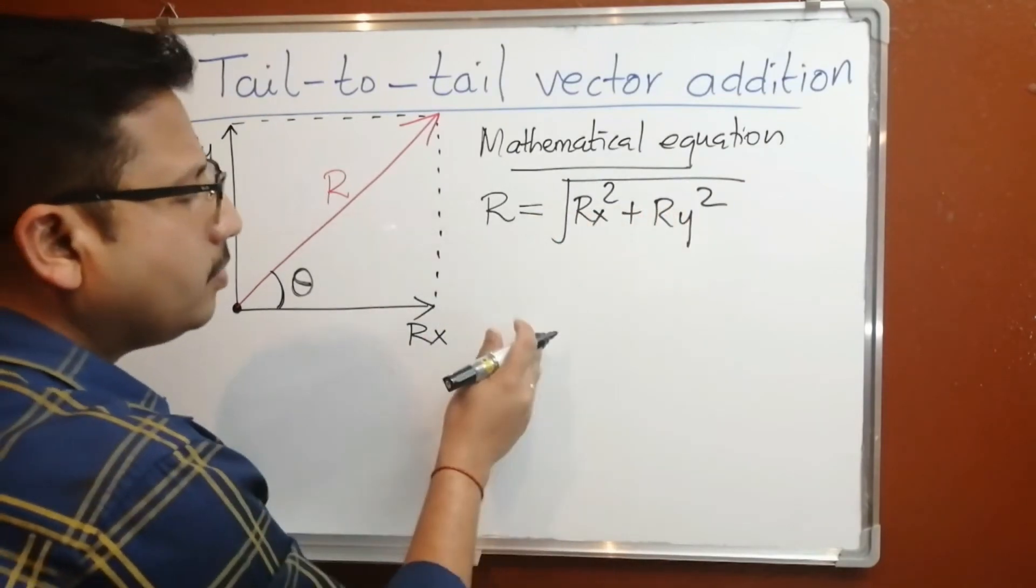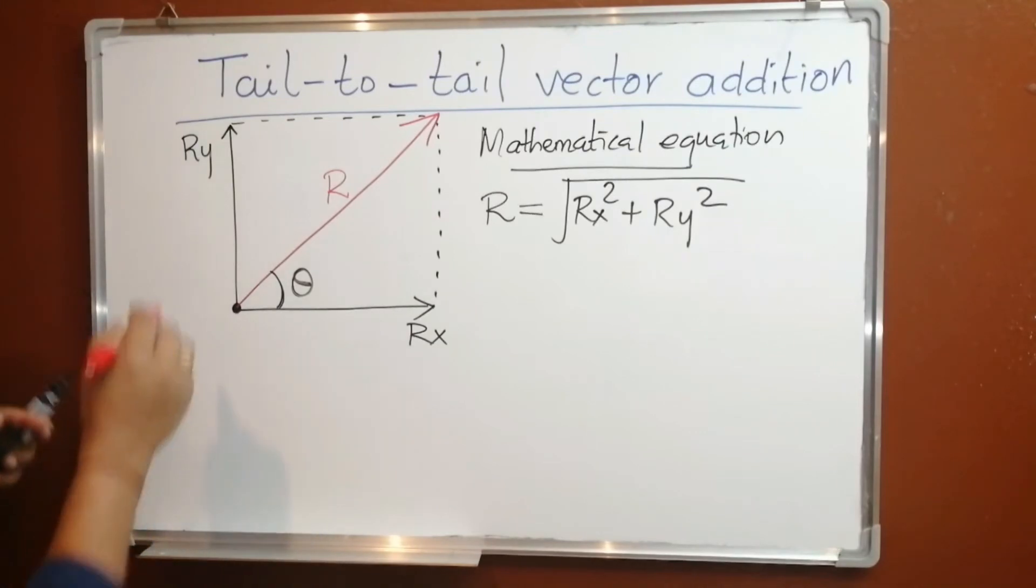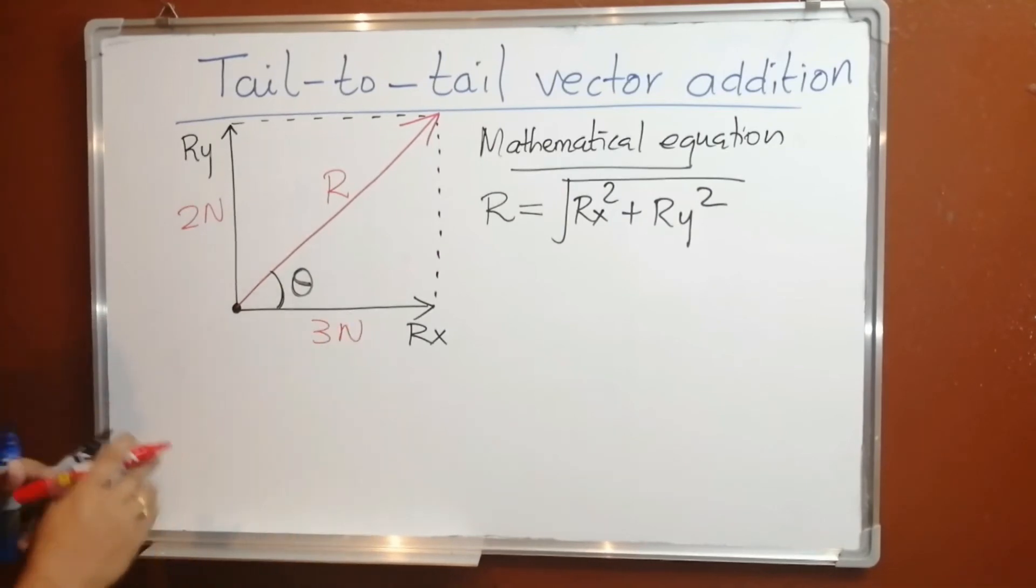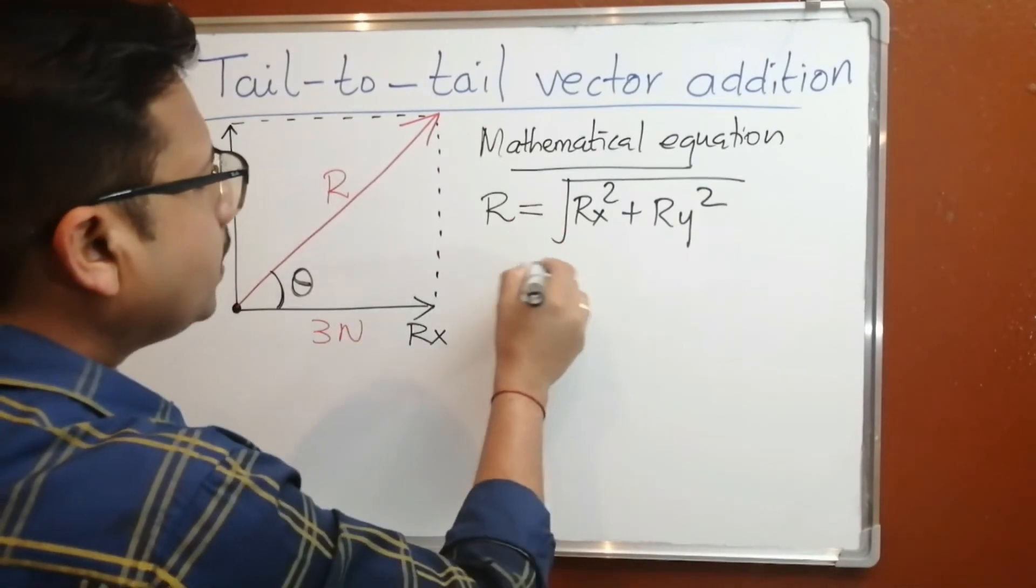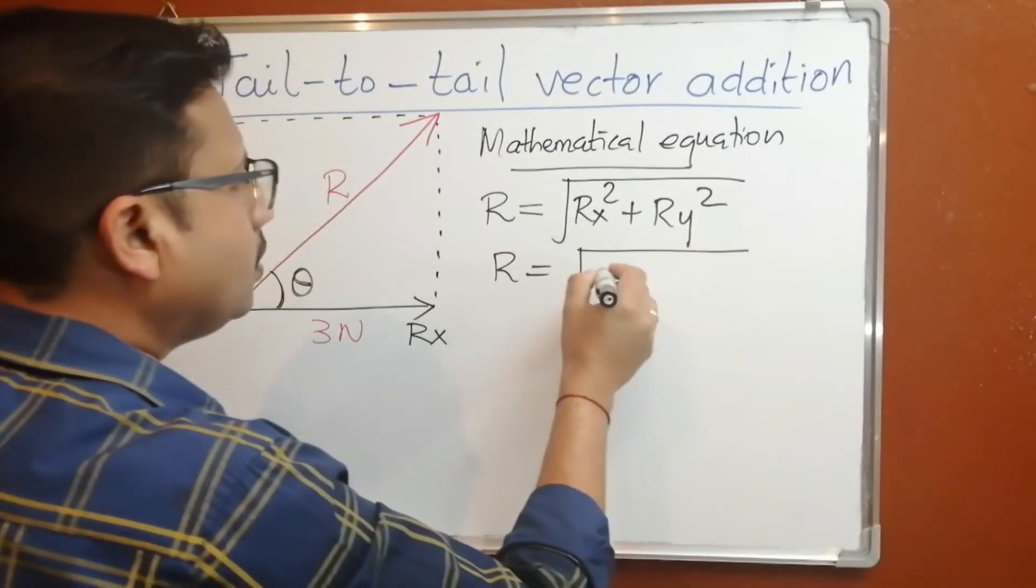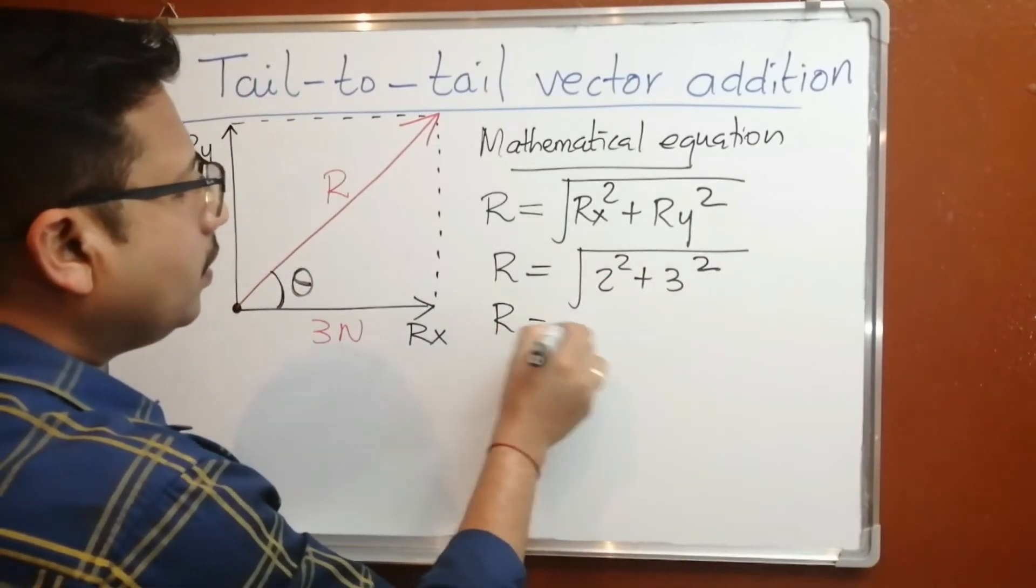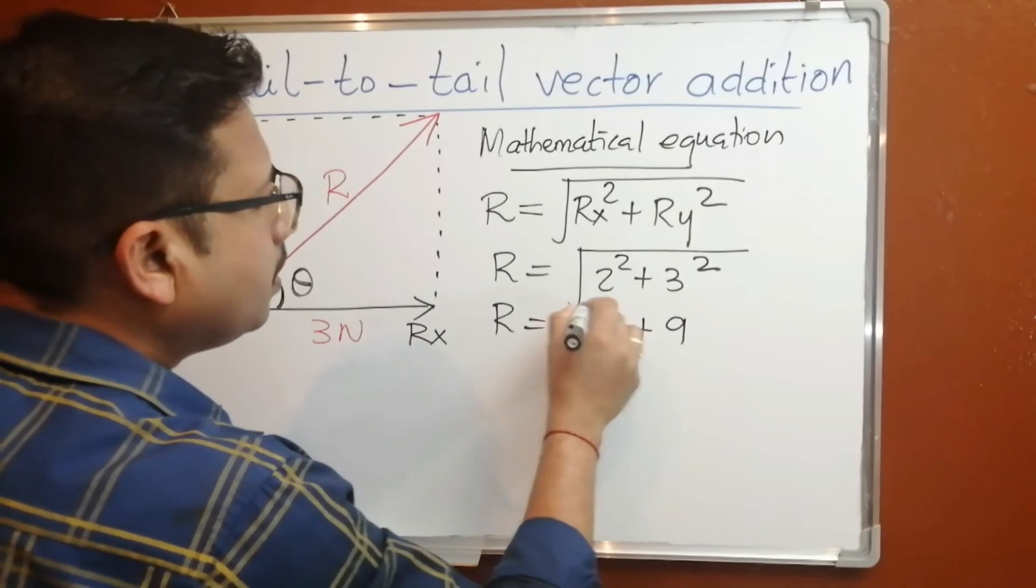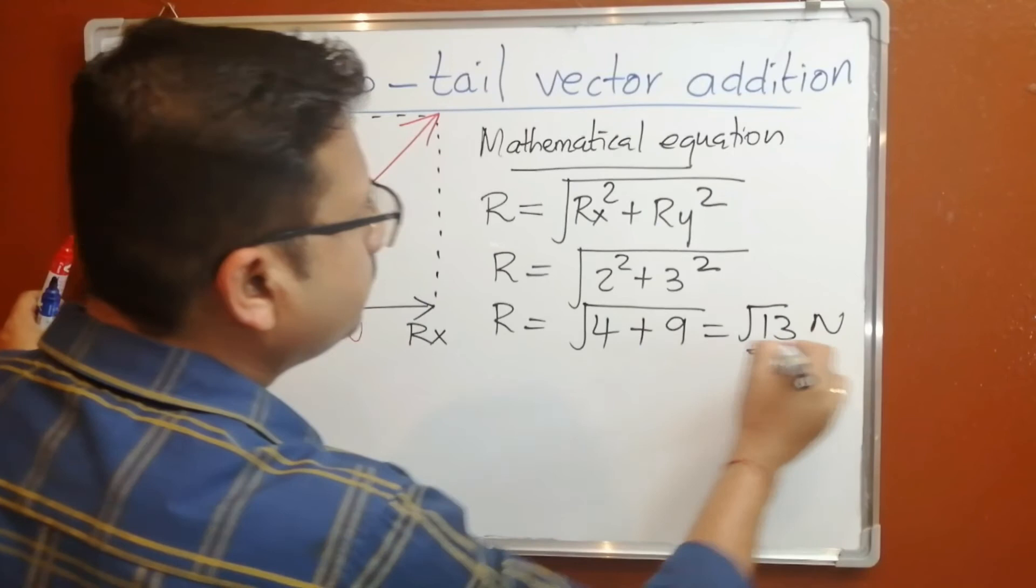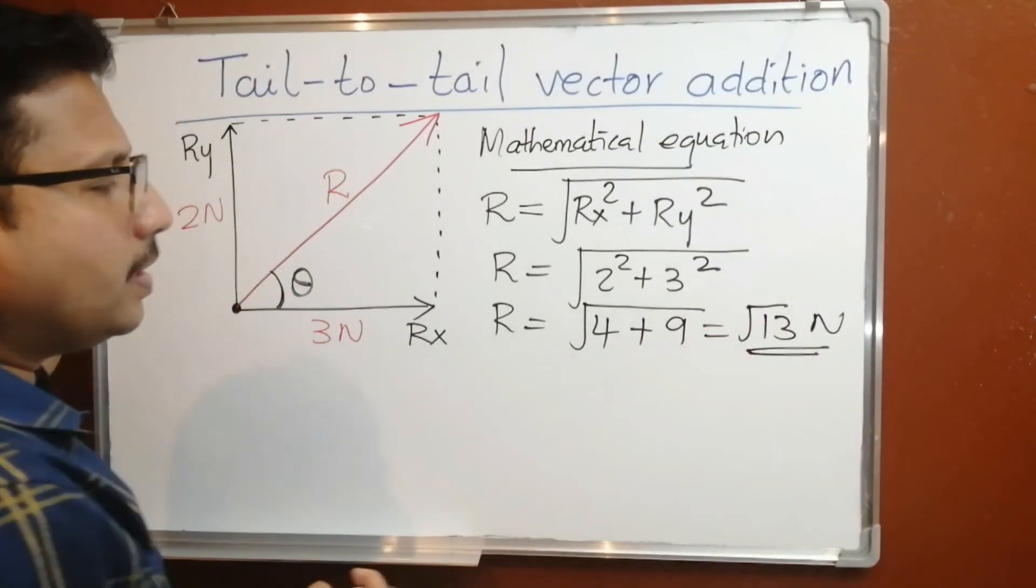You can substitute the values here and you will get the answer. For instance, let's say your r-y is 2 newton and r-x is 3 newton. Substituting this equation, your r equals resultant vector r equals square root of 2 squared plus 3 squared. r will be 4 plus 9 under the square root is square root 13 newton. You can calculate using a calculator or you can just leave it like that.